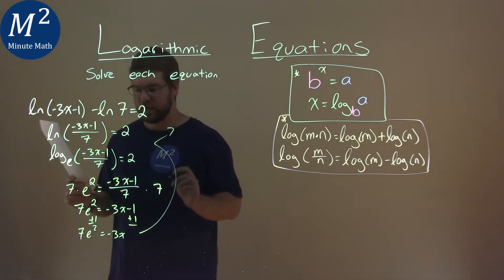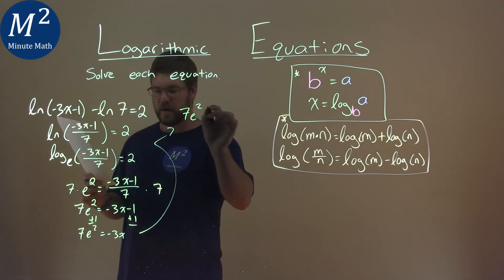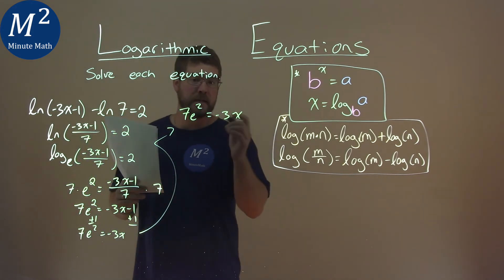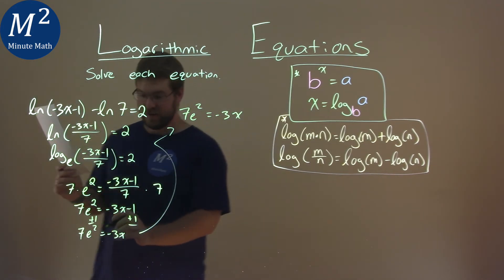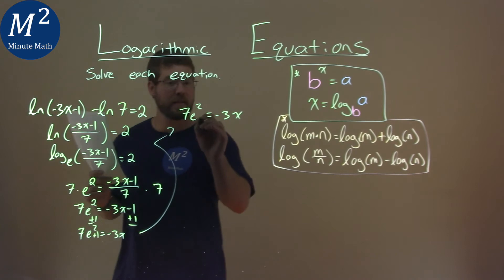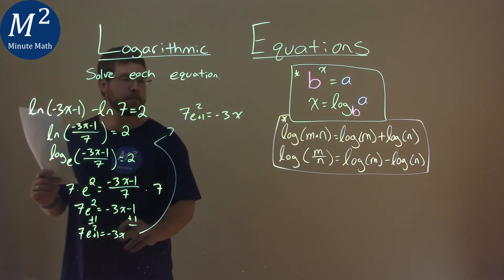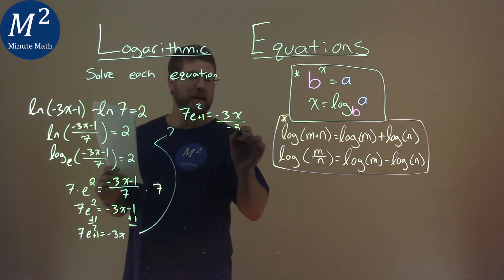I'm going to finish that up here. So to rewrite that, 7e squared is equal to negative 3x. I want to divide both sides now by—I'm sorry, e squared plus 1. I almost forgot that when I brought it up there. Got to be careful. Let's take our time there. Plus 1 down here. Divide both sides by negative 3.